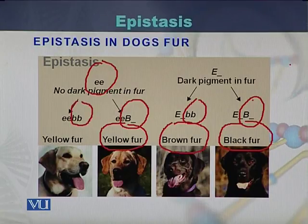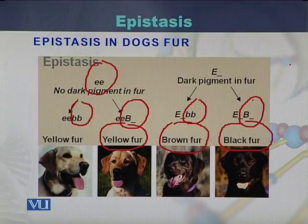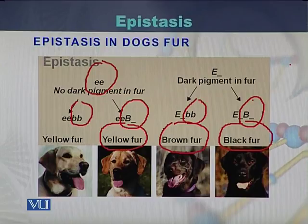The second gene affects the expression of the first gene. If there is only the first gene, the fur of the dogs will be either black or brown, but if the second gene is in homozygous recessive form, then the fur of the dogs will be yellow.